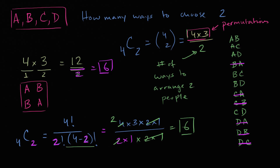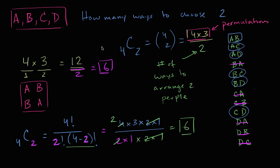If we correct for the double counting, we're left with one, two, three, four, five, six combinations — six possible ways of choosing two from a pool of four, especially when you don't care about the order in which you choose them.